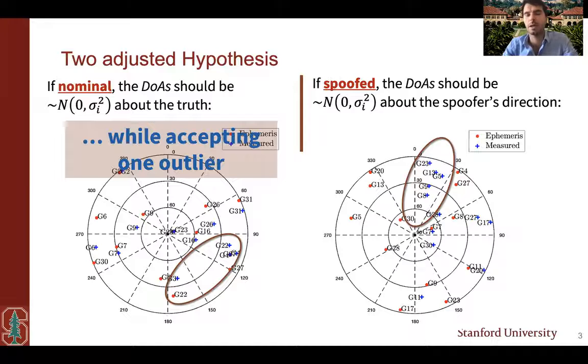Under spoof conditions, on the other hand, we usually expect all the measurements to come from the same direction. We show data where this is not the case and only a subset of satellites is spoofed. And we show that you actually have to include this hypothesis and test for this hypothesis. Otherwise your detection performance is significantly reduced.